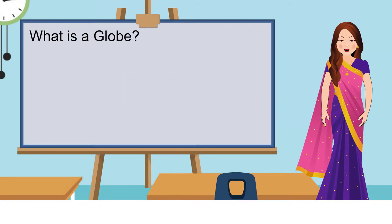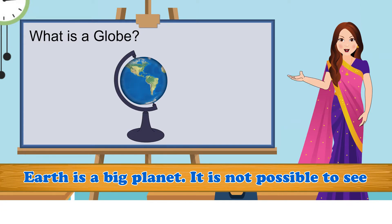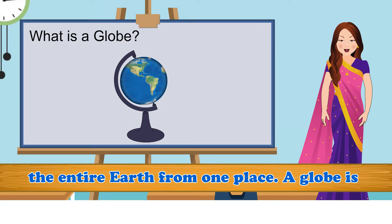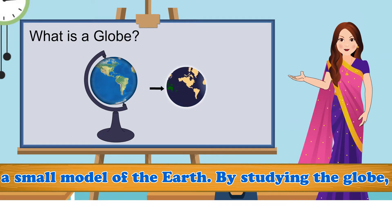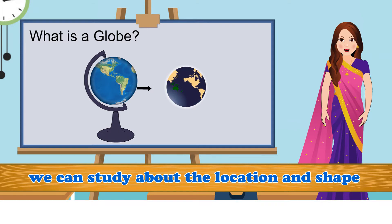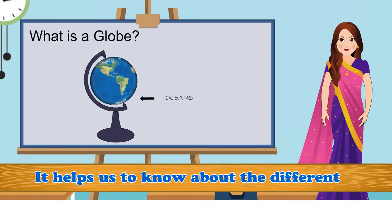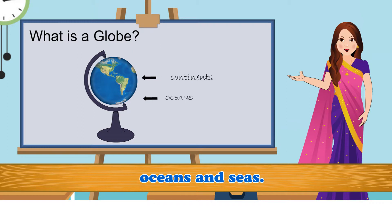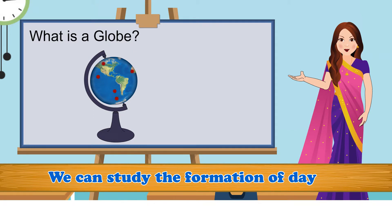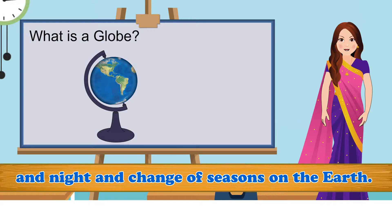What is a globe? Earth is a big planet. It is not possible to see the entire Earth from one place. A globe is a small model of the Earth. By studying the globe, we can study the location and shape of continents and countries. It helps us know about the different oceans and seas, and we can study the formation of day and night and change of seasons on the Earth.